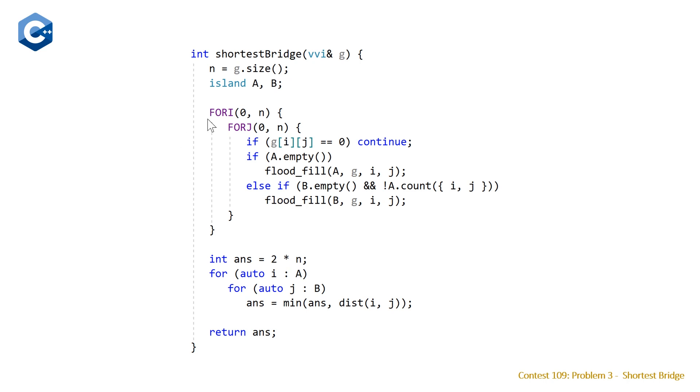Our first piece of code here, our nested for loop, is looping through each of the elements. If it has a value of 1, we just skip over it. We're trying to find an element that has a value of 1. Once we have found one of these elements, we're going to check, have we filled island A yet? If not, perform flood fill and pass in our island, as well as the grid and the starting coordinates for our flood fill.